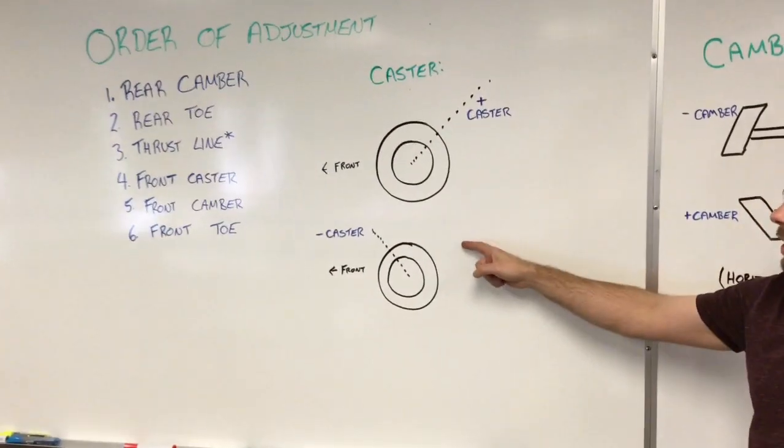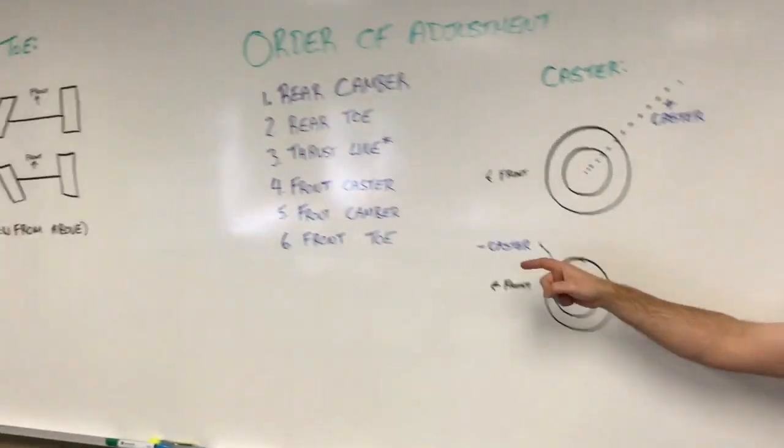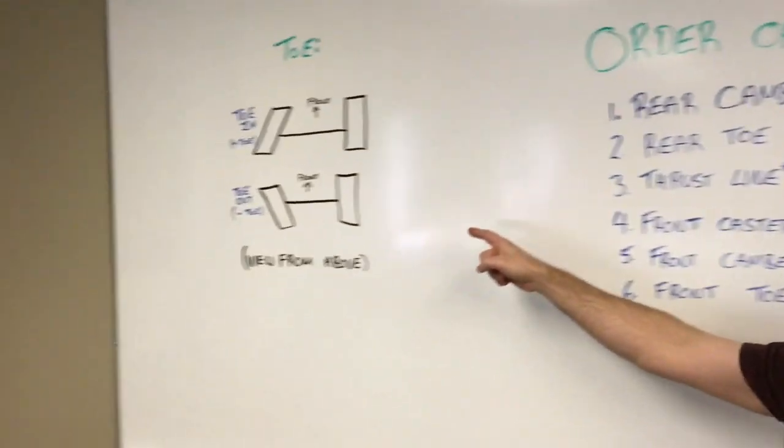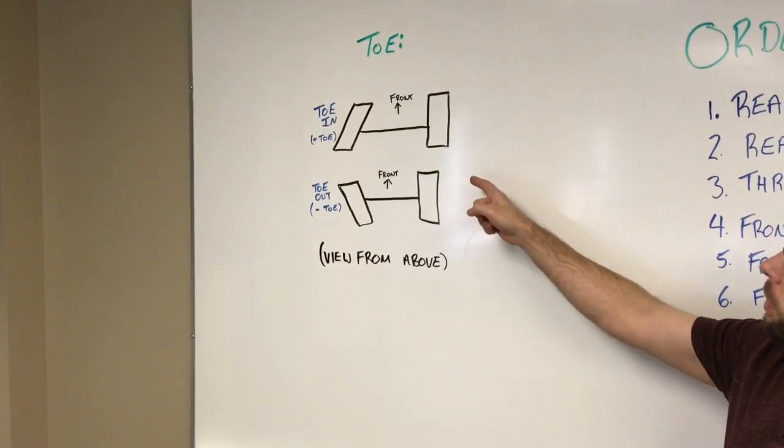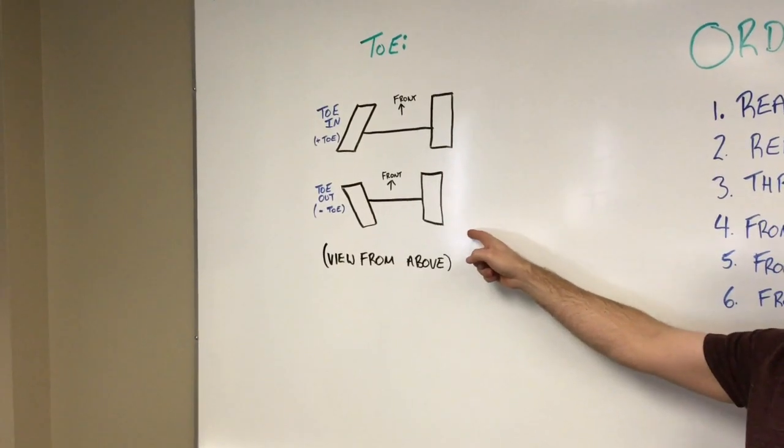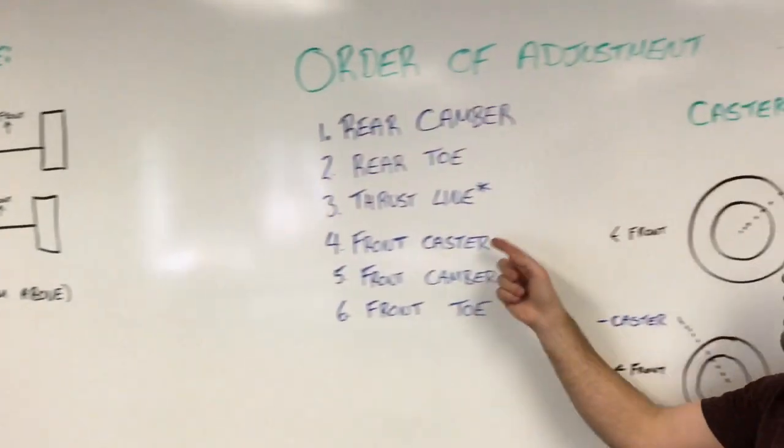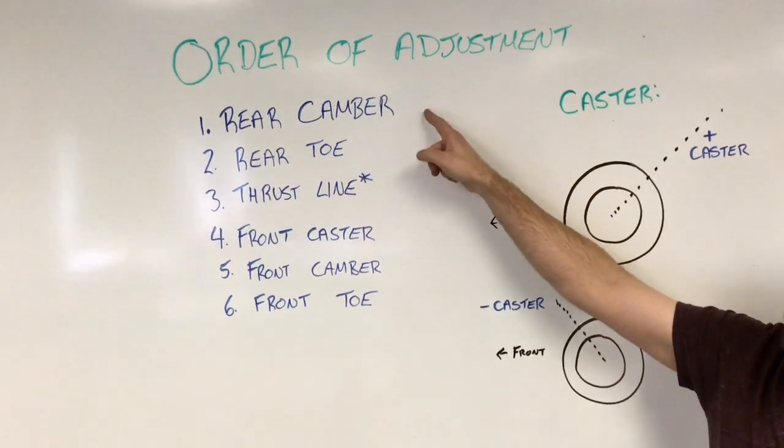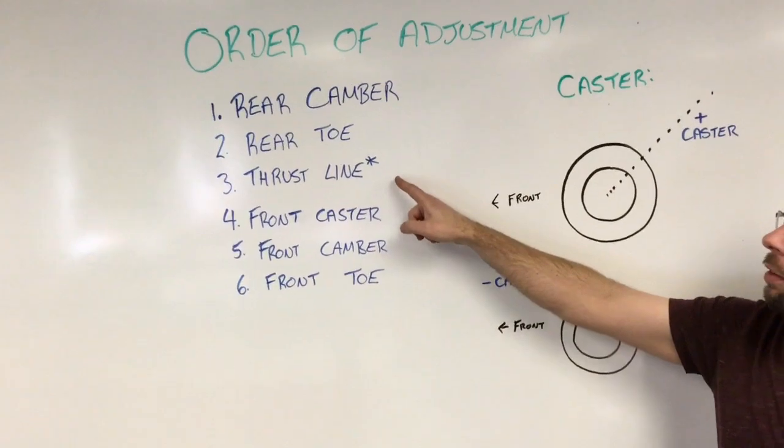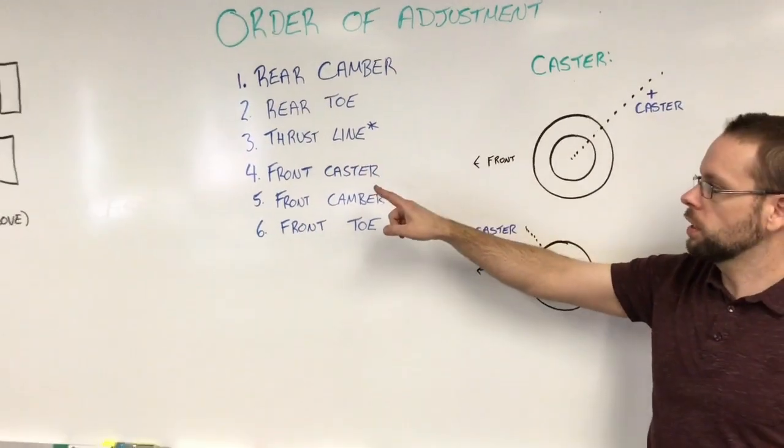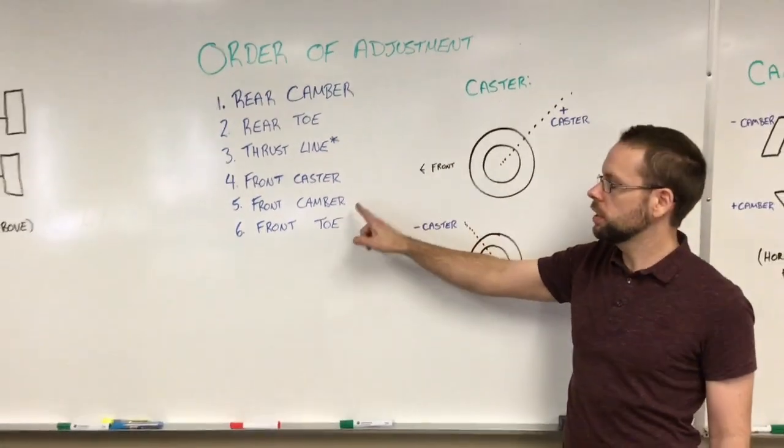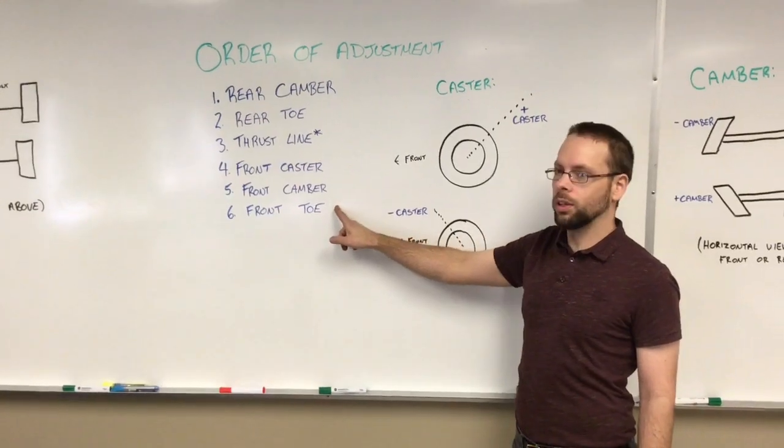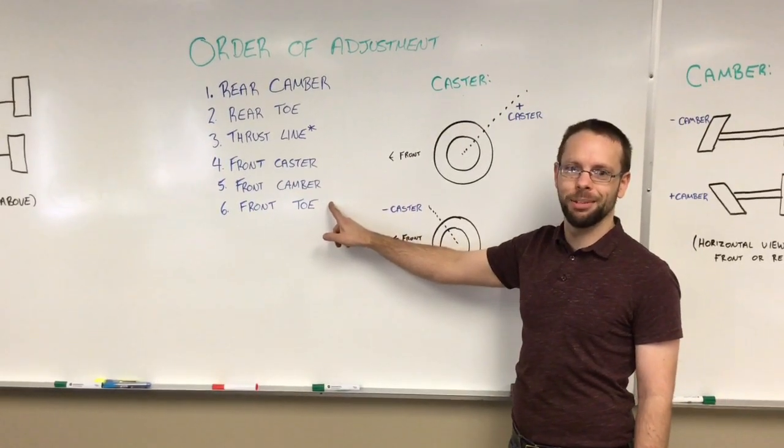If you go all the way to the end, I have some information on toe - toe in which is positive, toe out which is negative. The order of the wheel alignment adjustment starts with rear camber, then rear toe, and with that rear toe you'll adjust the thrust line. Moving to the front: front caster, front camber, front toe. Thank you for watching, we'll see you next time.